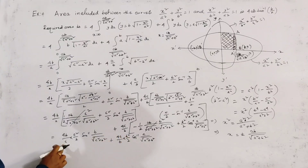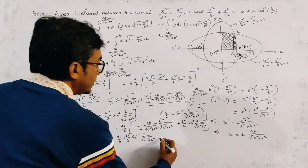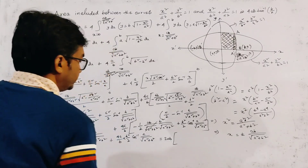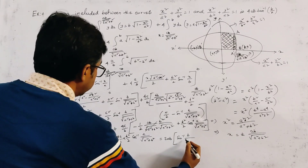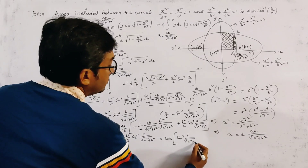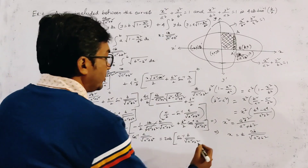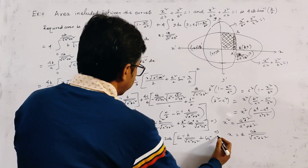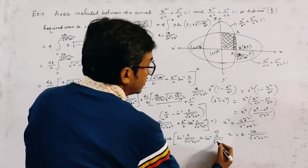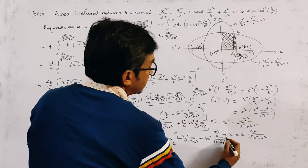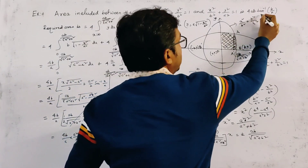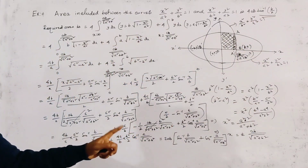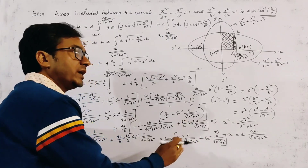Now we convert both sin⁻¹ and cos⁻¹ into tan⁻¹. For sin⁻¹(b/√(a² + b²)): if the perpendicular is b and the hypotenuse is √(a² + b²), then the base is a. Hence sin⁻¹(b/√(a² + b²)) = tan⁻¹(b/a). Similarly, cos⁻¹(a/√(a² + b²)) = tan⁻¹(b/a) as well.